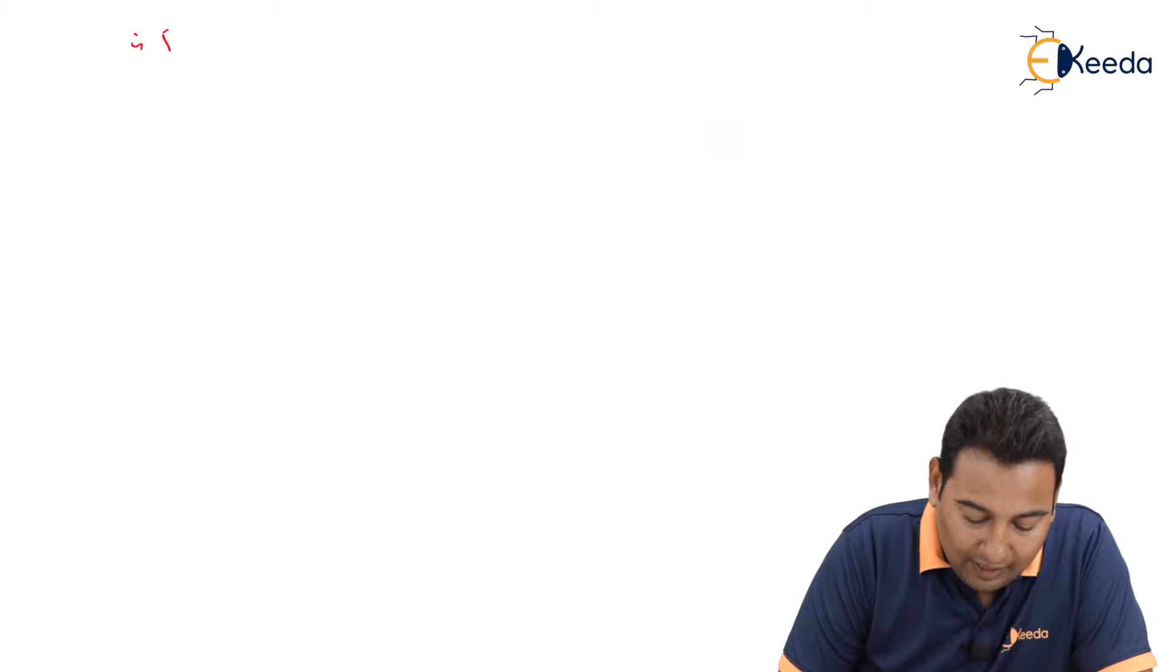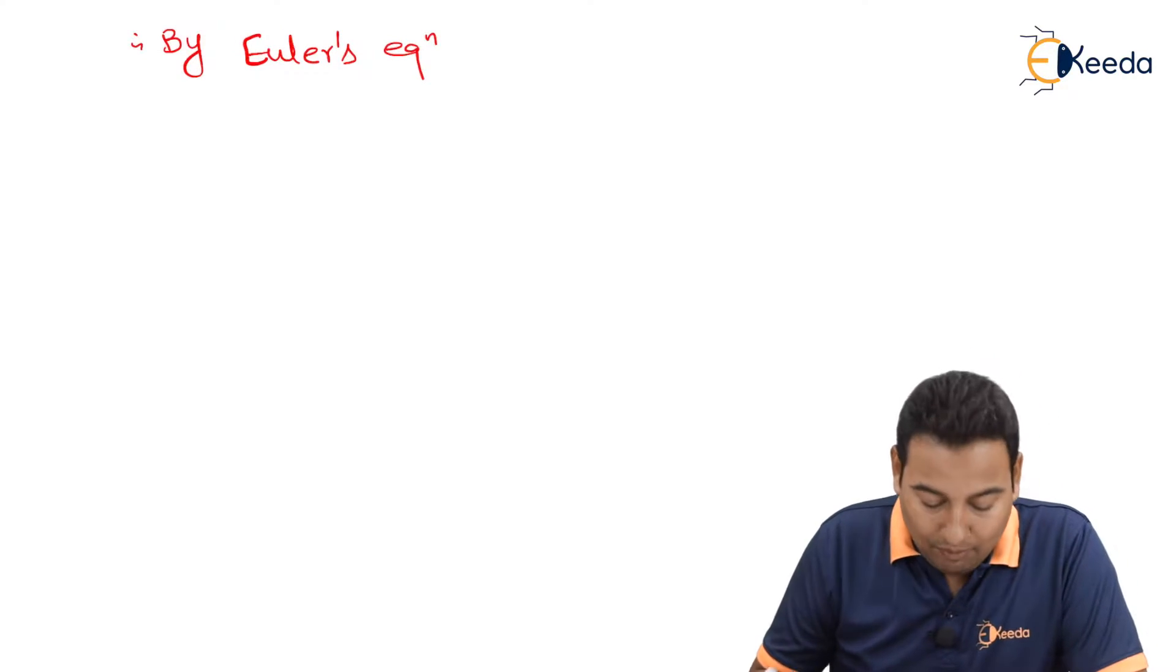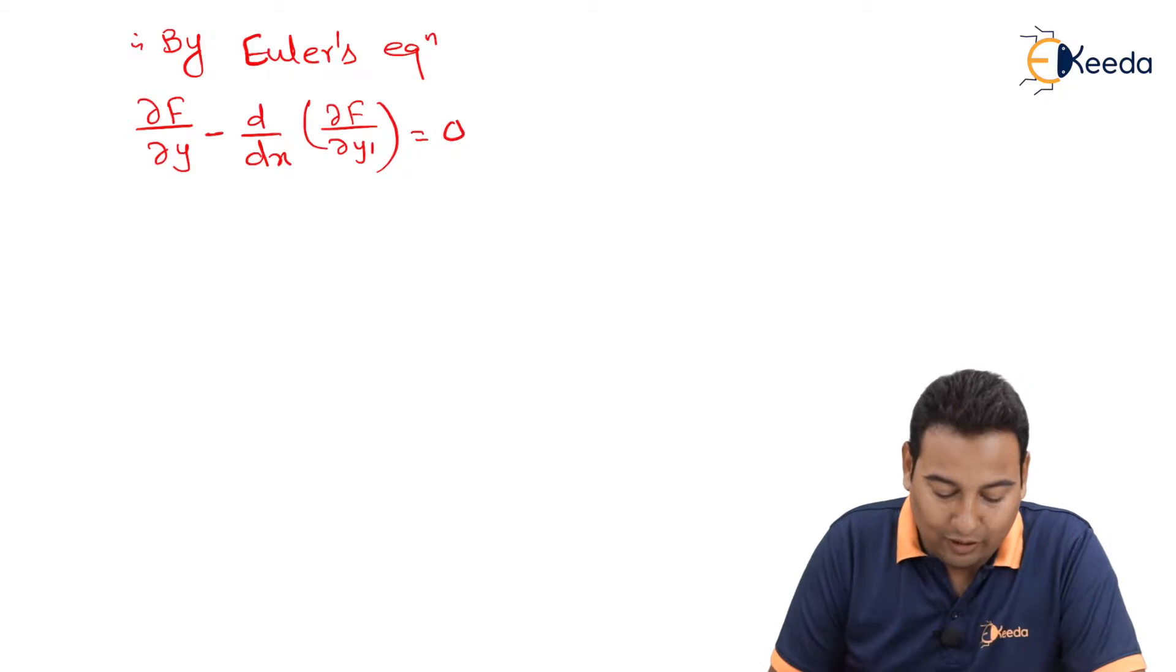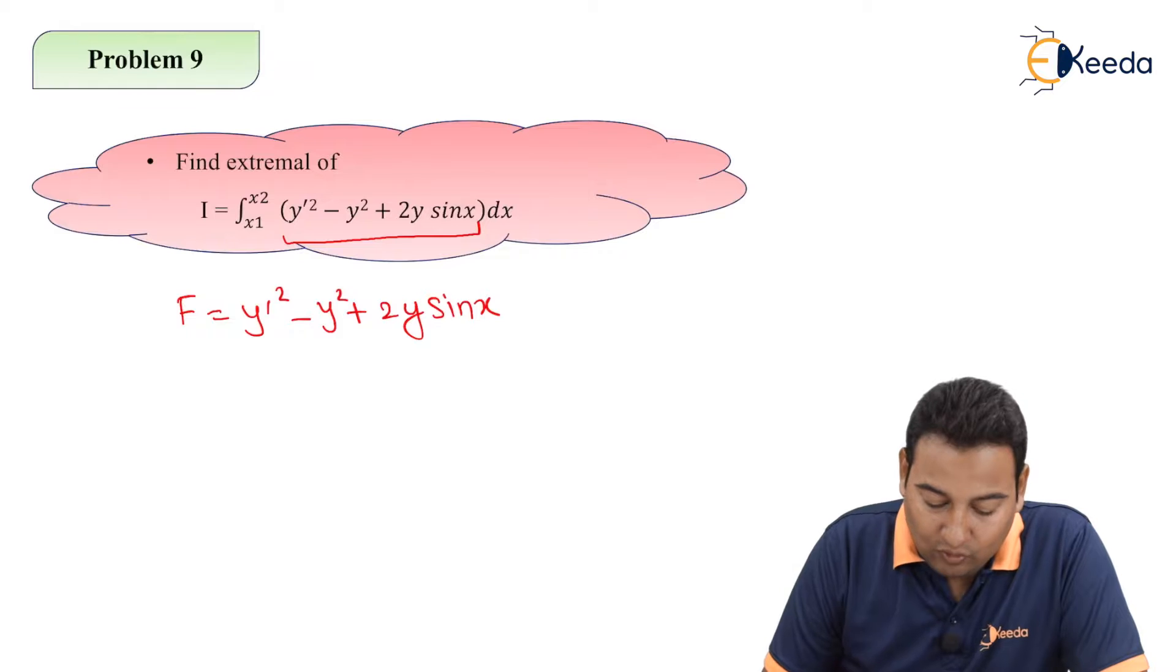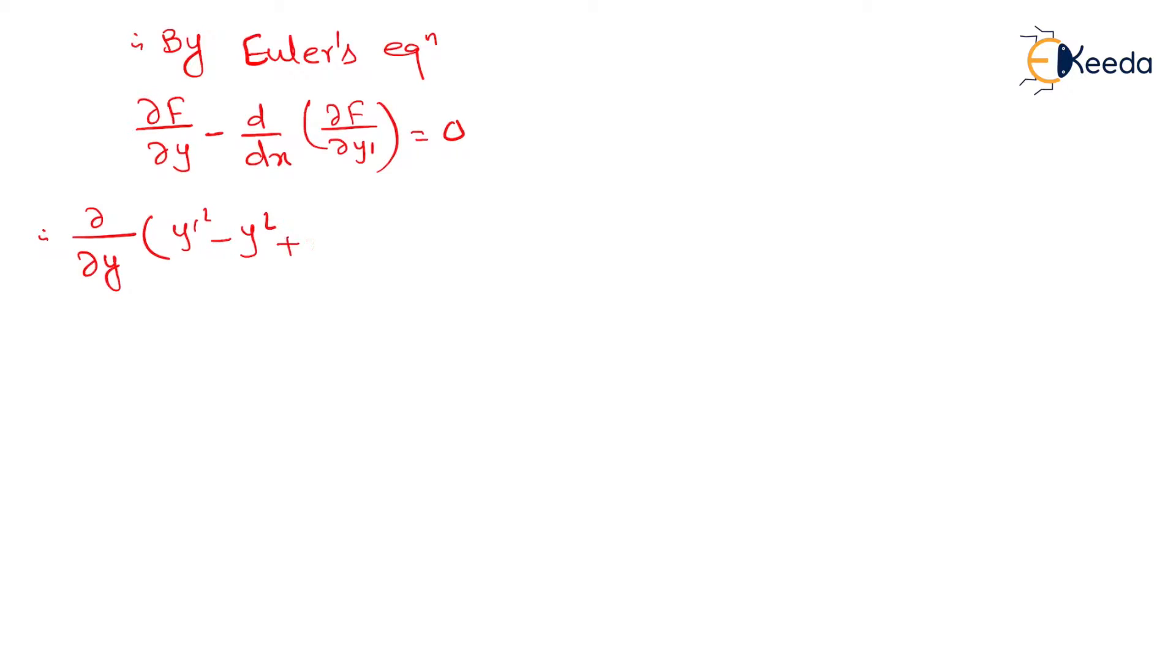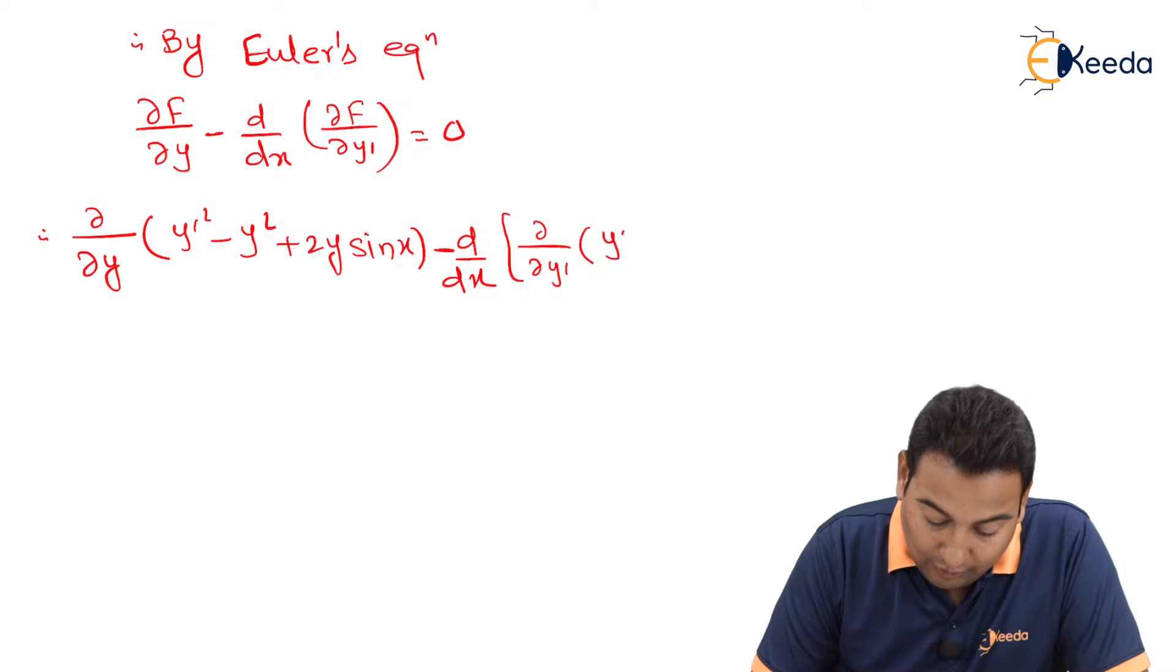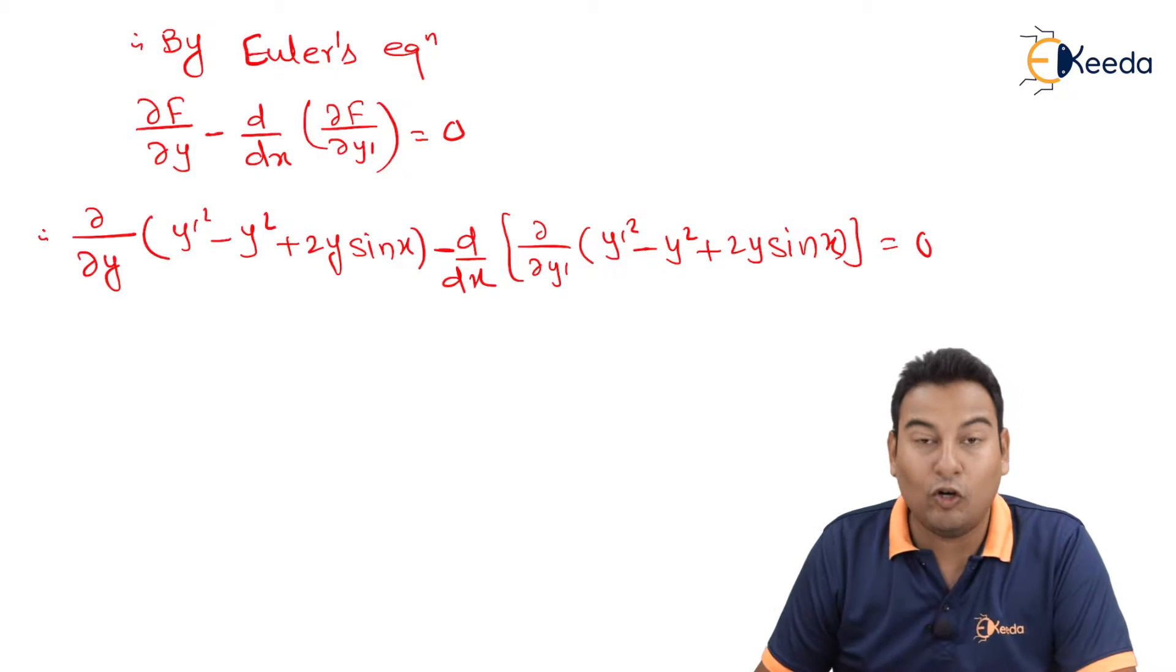Therefore, by Euler's equation, we do have two options. We are going to select one because that is the simpler one: ∂f/∂y minus d/dx(∂f/∂y dash) equal to 0. Therefore, ∂/∂y, let us put f. f here is y dash square minus y square plus 2y sin x. Minus d/dx of ∂/∂y dash of f. f is again y dash square minus y square plus 2y sin x equal to 0.